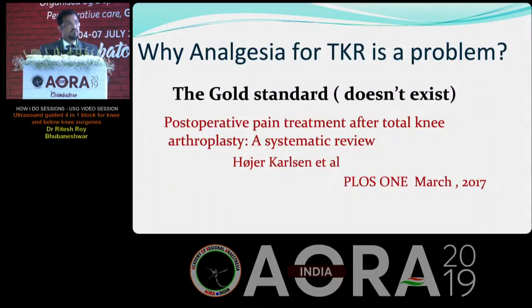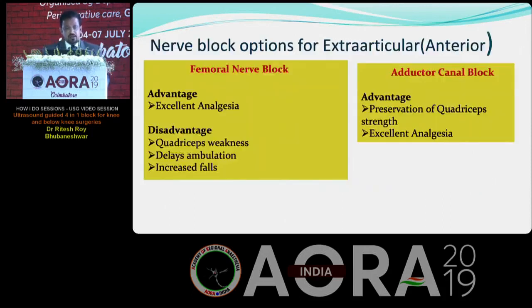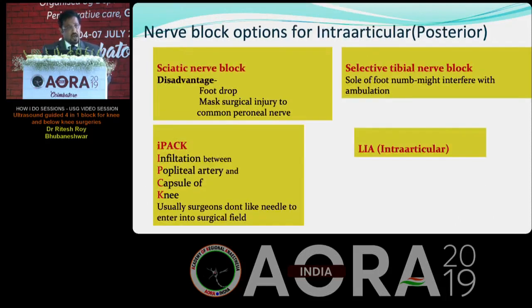Why is analgesia for TKR a problem? Till now there is no gold standard. Many methods have been tried with success and also without success. These are the nerve block options for extra-articular nerves, with their own advantages and disadvantages, and combined with them, the nerve block options for intra-articular nerves like the sciatic, the selective tibial, IPACK, and LIA.